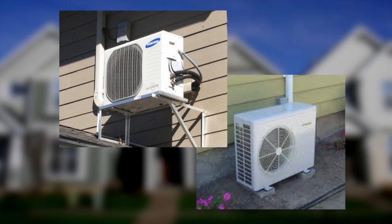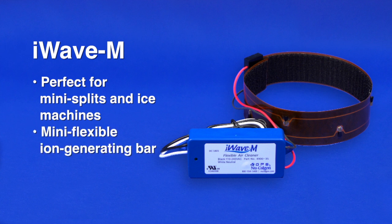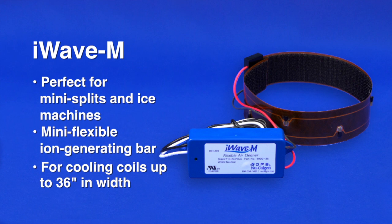For ductless systems, such as wall and ceiling cassette mini splits, as well as ice machines, we offer the iWave M, a mini flexible ion generating bar that will install on any cooling coil up to 36 inches in width.